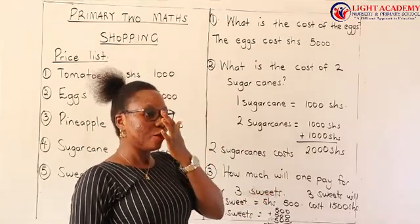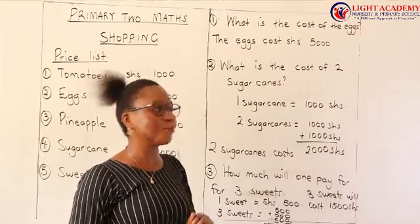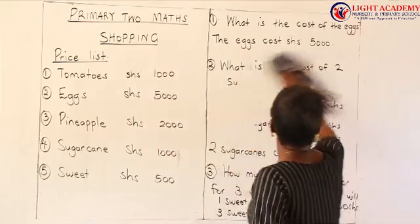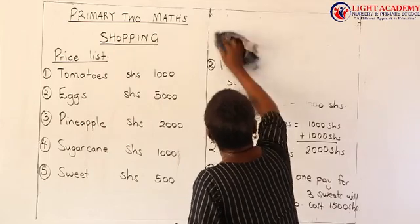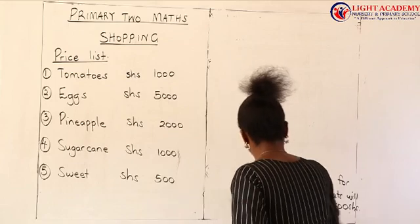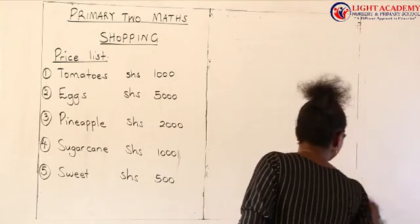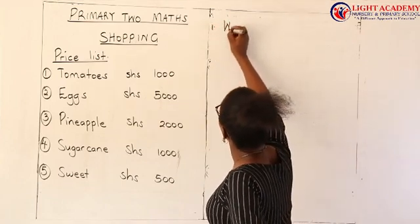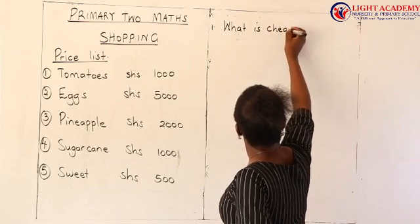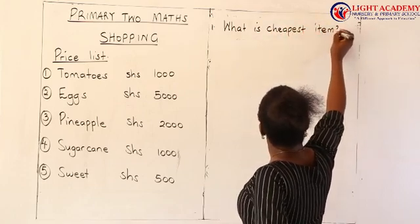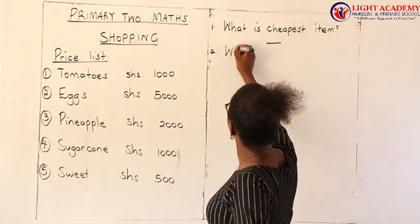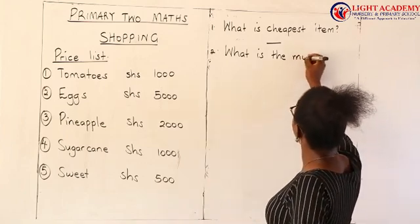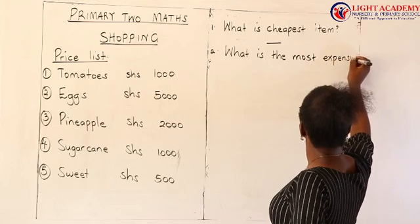Now I want you, where you're seated — I know you have a book and a pencil — to answer these questions. Question number one: what is the cheapest item according to the shopping list? Write it, answer it, and tell your parent, auntie, sister, or brother who is guiding you. Question number two: what is the most expensive item? Look at the list and identify which one is the most expensive item.